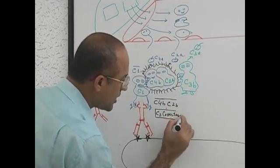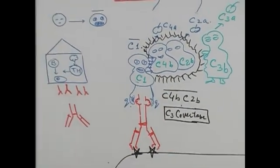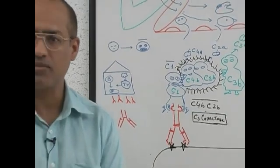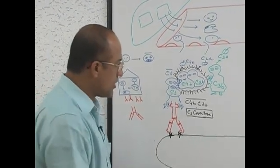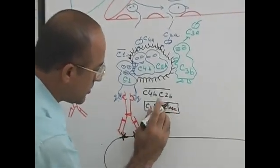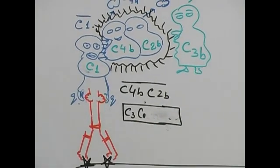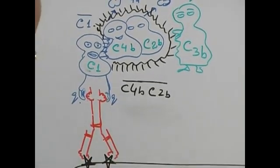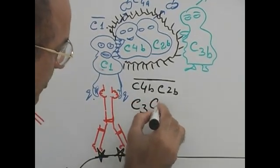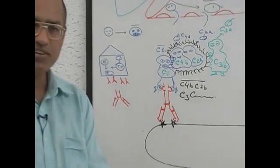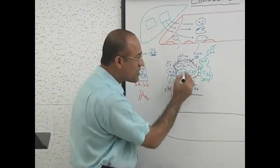C3 convertase, what is it called? C3 convertase. These two are called C3 convertase, which can convert the complement number 3 into active form. Someone find the mistake in my spellings. I am always weak in spellings, so I prefer to write it like this, that it is C3 convertase. So, this is C3 convertase, these two.